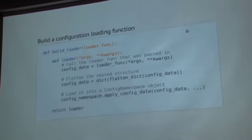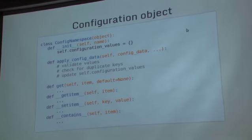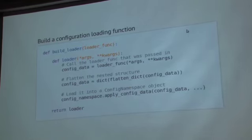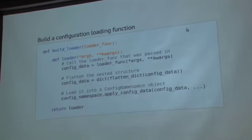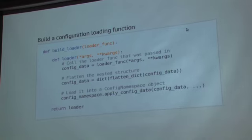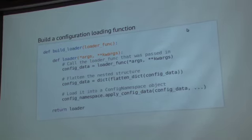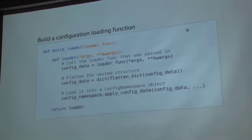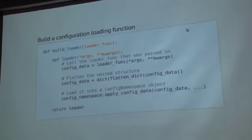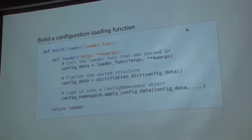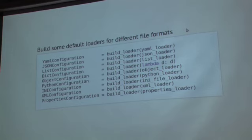But we don't really have any way to populate these right now. The constructor doesn't really take any data. We have to call this apply config data method. So I created this build loaders using the builder pattern. So the idea is that it's a function that takes another function, the interface of this function accepts any arguments, and it just has to return a dictionary with configuration data. And this build loader will compose that function. It will call it, flatten the data, and then apply that data, basically update the dictionary within the config namespace. And again, so this is the alternative to inheritance is this composition. And I felt that this makes it a lot easier to extend the library.